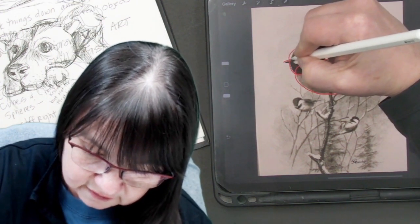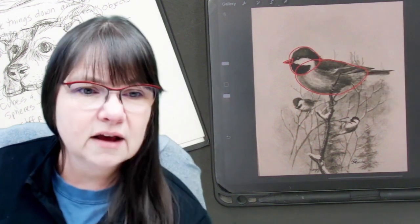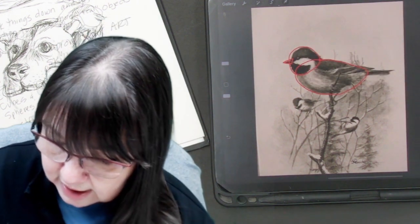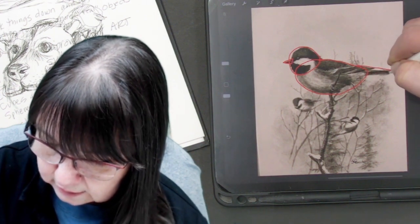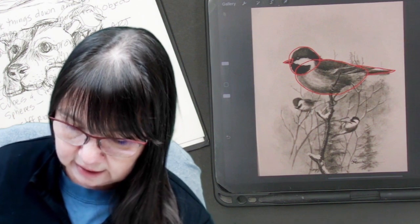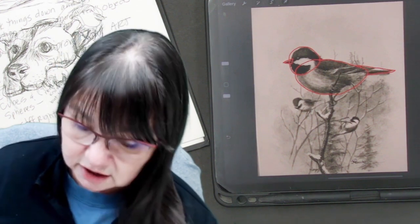This is the shape that I see, a triangle. And this is the shape that I see on the back, and that is another triangle.